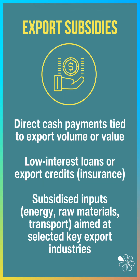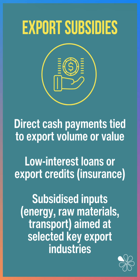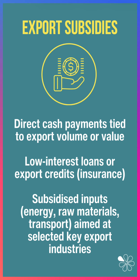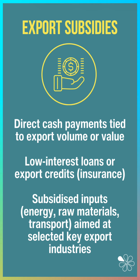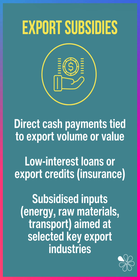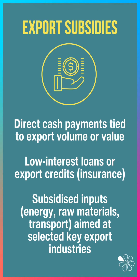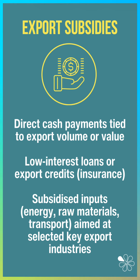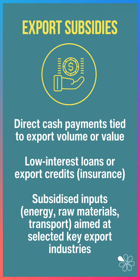Here are three examples. The government might offer direct cash payments tied to export volume or value. They could offer low interest rate loans or export credits, a form of insurance. And they could subsidise inputs — for example, energy, components, raw materials and transport — aimed at selected key export sectors.